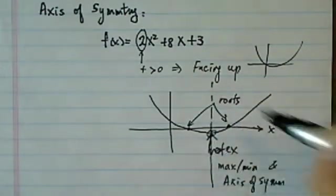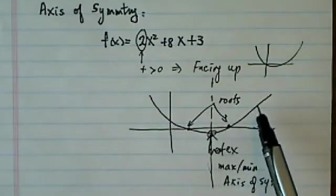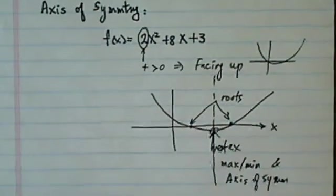Because symmetry is where you fold this curve. If you were to fold along this line, dotted line here, the curve would be right on top of each other.